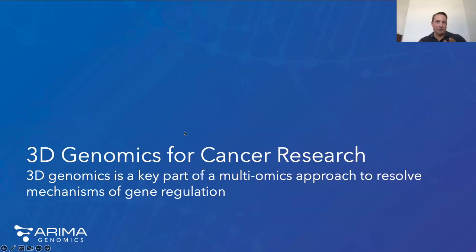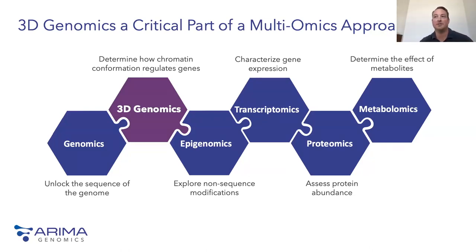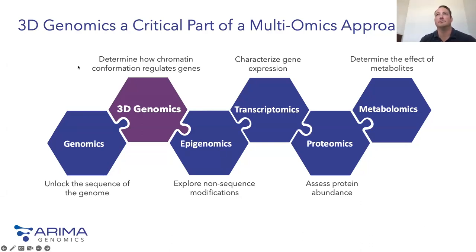I want to start with the gene regulation piece and talk about how 3D genomics is an important part of a multi-omics approach to understand mechanisms of gene regulation. Where we see it fitting in the toolkit: epigenomics explores things like chromatin state, transcription factor binding, and other non-coding sequence modifications like DNA methylation. Many researchers are measuring phenotypic information through gene expression measurements. And then 3D genomics comes in by informing those long-range interactions that help orchestrate gene regulation.